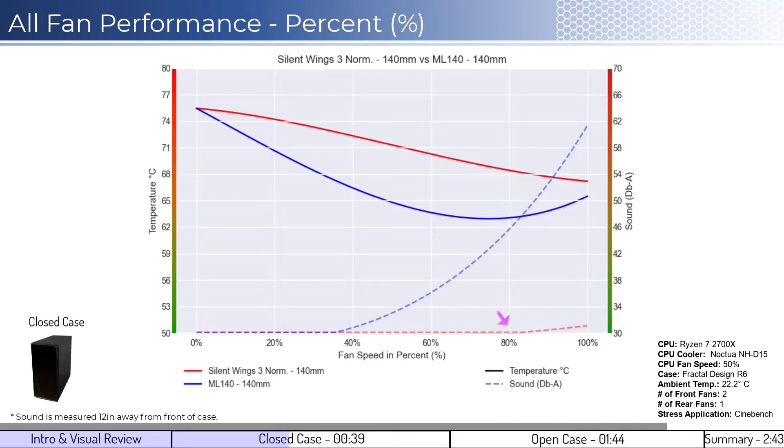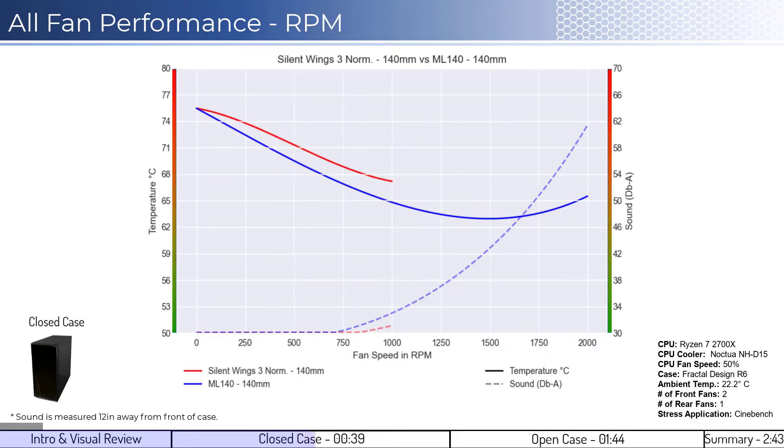When considering noise, the Silent Wings fan is quieter across the board and generally doesn't make noise above ambient levels. When considering performance on an RPM basis, the ML140 fan is slightly cooler across comparable RPMs, while only being slightly louder between 900 and 1,000 RPM.